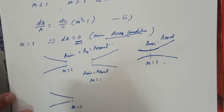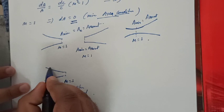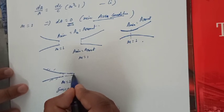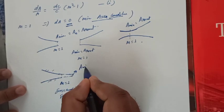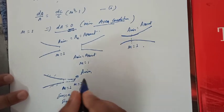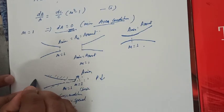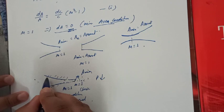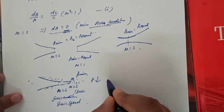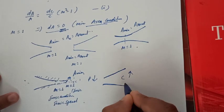M equal to 1 means this is the sonic condition — this is sonic speed. So for a converging nozzle, we can achieve M equal to 1 at the minimum area, which is the sonic condition. The sonic condition is the limit of the converging passage.